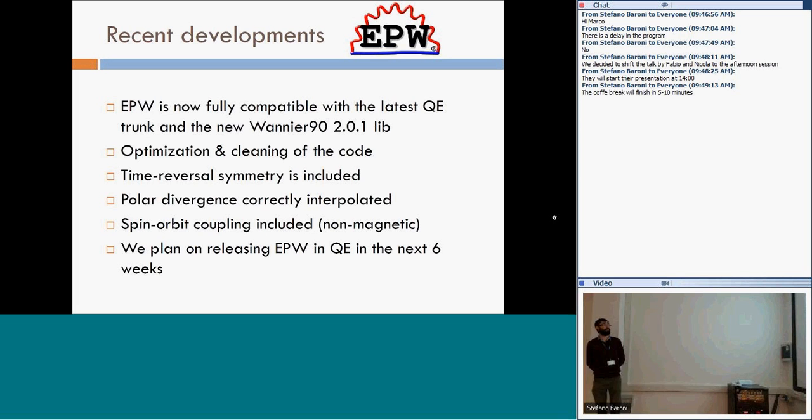I'll present some of the recent development in EPW4. EPW4 is now fully compatible with the latest Quantum Espresso trunk and also the new Wannier90 library. It has been optimized and has been cleaned and cleaned. Also, some crystal symmetry has been added. The polar divergence that has been implemented previously is also slightly improved. We have worked on including the spin-orbit coupling. And we plan to release the EPW software in the following two to six weeks. Actually very soon.